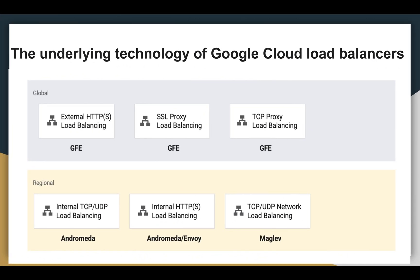Next we are going to see the underlying technology of Google Cloud load balancers. This section provides more information about each type, including links to overview documentation for a deeper understanding. Google Front Ends (GFEs) are software-defined distributed systems that are located in Google Points of Presence (POP) and perform global load balancing in conjunction with other systems and control planes.